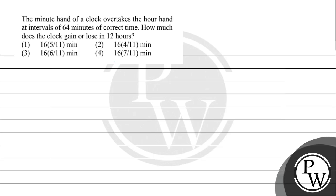The minute hand of a clock overtakes the hour hand at intervals of 64 minutes of correct time. How much does the clock gain or lose in 12 hours? Let's see: 60 minutes are gained...